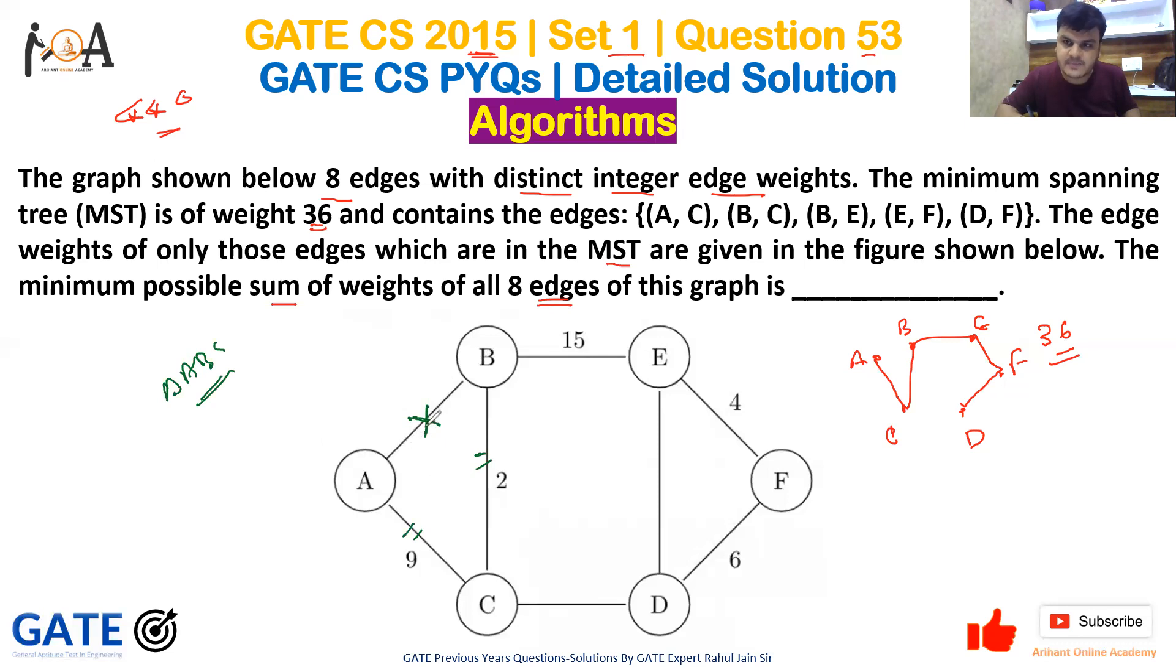This only happens in one case: A-B must be greater than A-C. Since A-C is 9 and B-C is 2, and 2 is less than 9, we're comparing in terms of A-C. A-B must be greater than A-C, that is why we are not taking it into the minimum spanning tree.